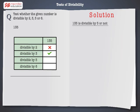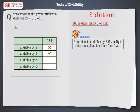Now, let's check whether the number 135 is divisible by 5 or not. Let's recall that a number is divisible by 5 if the digit in the 1's place is either 0 or 5. In the given number, 135 has 5 in the 1's place. Therefore, as per the given rule, 135 is divisible by 5.